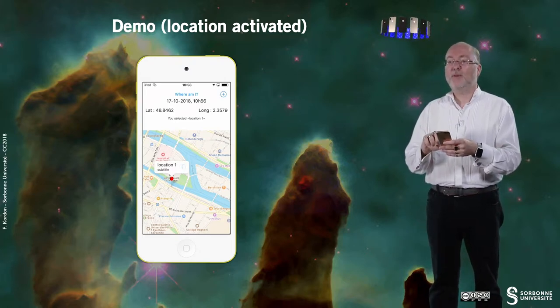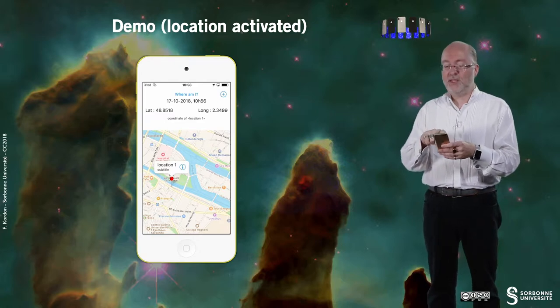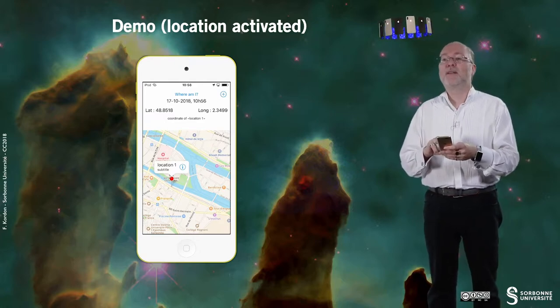And if I tap on the callout then you see that the coordinates latitude and longitude had been updated. And also the label that states that these are the coordinates of location 1.